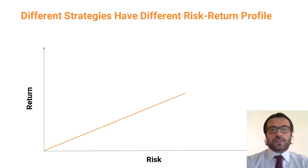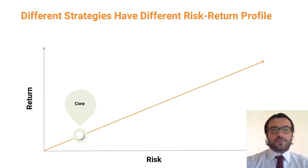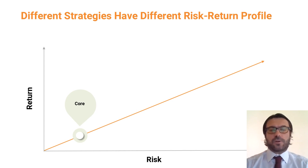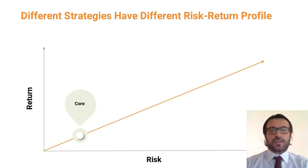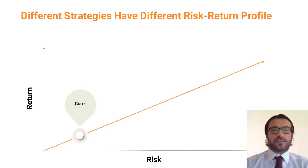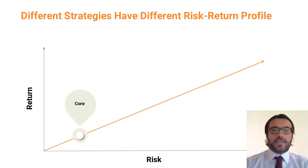First, let's introduce the core investment strategy. A core investment strategy is essentially buying a property and generating an income from rental. The strategy is the lowest in terms of risk and inevitably generates the lowest return, but is also the safest.